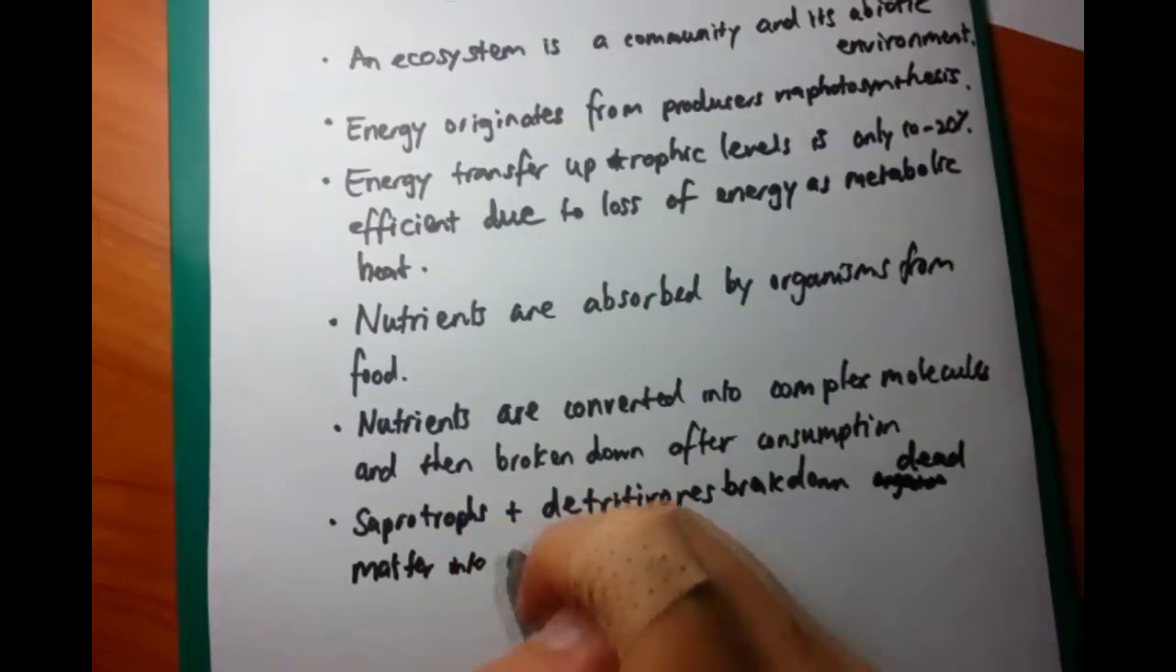At the very end of the cycle, we want to talk about the decomposers. And these are saprotrophs and detritivores. And they break down dead matter into simple organic matter, which can then be recycled. So this is the cycle of nutrients. You start from the beginning, you start from consumption, and you go all the way through decomposition.